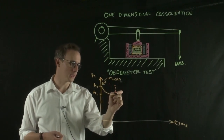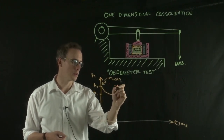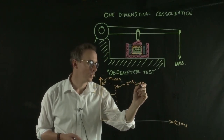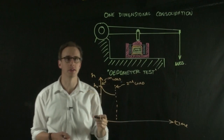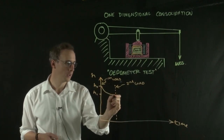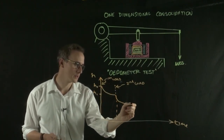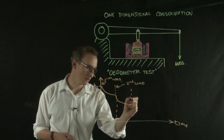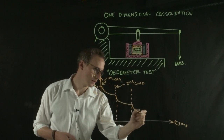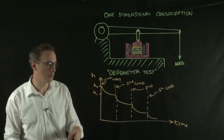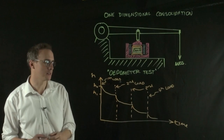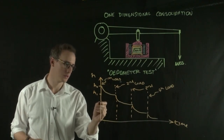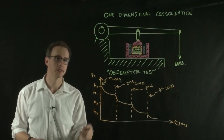At that point we can apply another load — this is our second load. We stick another mass onto the loading arm and the sample will do something similar again: it will decrease in thickness until it plateaus. We do that several times. So we've loaded our sample and it's decreased in thickness, and we measure the thickness at each of those points — H2, H3, etc.